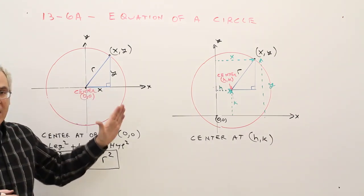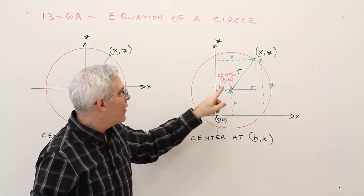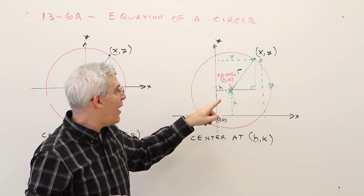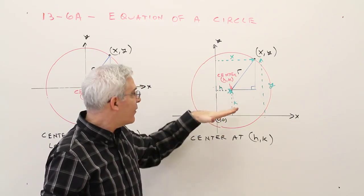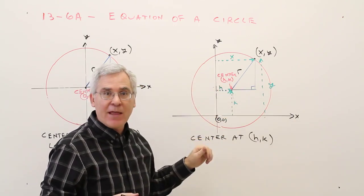Now, if the center is not at the origin, over here, I've got it listed at h, k. It's h units off of the axis, and k units above the x-axis.